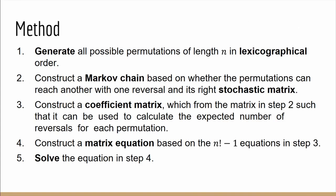Our method to tackle the problem is as follows. We start by generating all the possible permutations of length n in lexicographical order and then constructing a Markov chain based on where the permutations can reach another with a single reversal and find its right stochastic matrix. With the stochastic matrix we can then find and construct a coefficient matrix as well as a matrix equation. And finally we can solve the equation to obtain the answers we need.